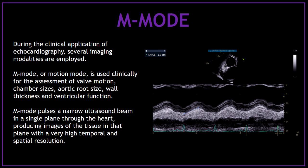During the clinical application of echocardiography, several imaging modalities are employed. The M-mode, or motion mode, is used clinically for the assessment of valve motion, chamber sizes, aortic root size, wall thickness, and ventricular function. M-mode pulses a narrow ultrasound beam in a single plane through the heart, producing images of the tissue in that plane with a very high temporal and spatial resolution.